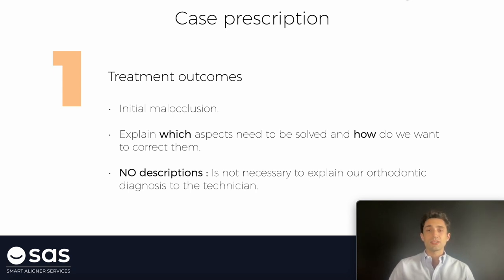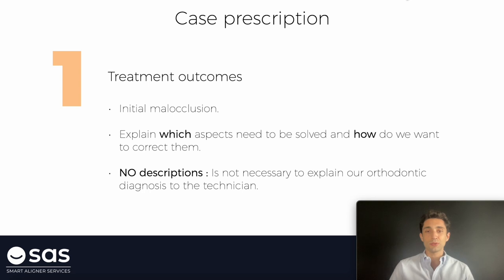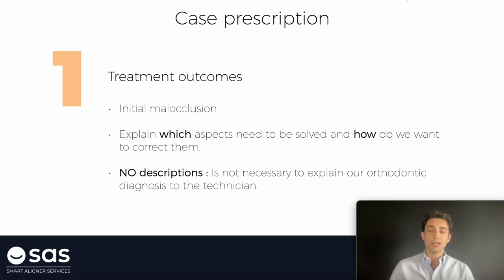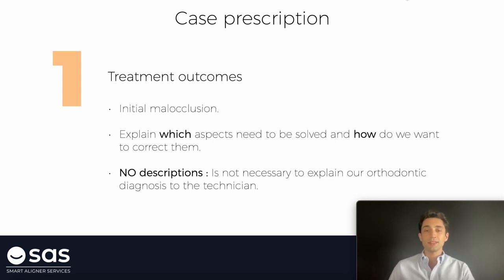It's time to translate all this orthodontic knowledge to informatic knowledge. We should write all the instructions to the technician in order to prepare this first treatment plan. With this initial malocclusion, we want to finish with everything online, everything solved, and we should explain to the technician which aspects we are going to correct — if we need to solve the sagittal problem, if we are going to procline or to retrocline our teeth. All these aspects should be written on this initial prescription. We should write which are our goals or the treatment outcomes and how we want to correct those problems.